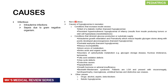Causes include infectious versus non-infectious. Infectious causes include intrauterine infections in very young individuals — neonates — and sepsis due to gram-negative organisms. Non-infectious causes include conditions that increase insulin excess, such as an infant of a diabetic mother — a transient cause — and persistent hyperinsulinemic hypoglycemia of infancy, resulting from insulin-producing tumors or islet cell hyperplasia. Conditions that diminish glucose production include intrauterine growth restriction and prematurity, associated with decreased hepatic glycogen stores and poor ability to perform gluconeogenesis — a transient cause as well.